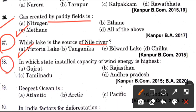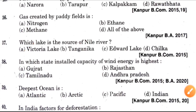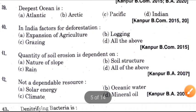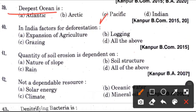Next question: In which state is the installed capacity of wind energy highest? Answer is A, which is Gujarat. Now, deepest ocean is? Answer is C, which is Pacific Ocean. Fortieth question: In India, factors for deforestation are? Answer is D, all of the above. Now, next question: Quantity of soil erosion depends on? Answer is all of the above.